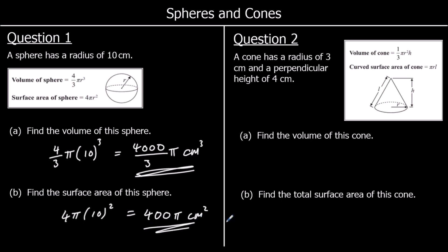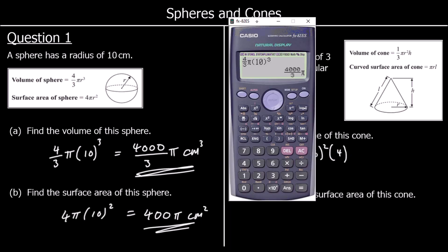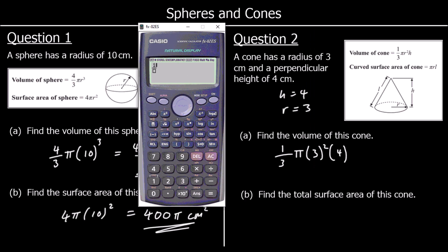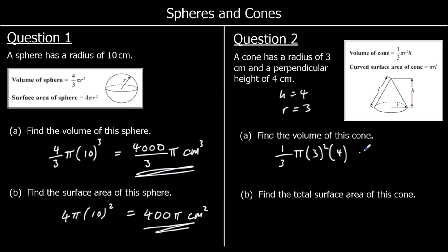Question 2: we're looking at cones. We've got a cone with a radius of 3 and a perpendicular height h of 4. Find the volume: the volume is one third pi r squared h. So one third pi times 3 squared times 4, and typing that into the calculator gives 12 pi centimeters cubed.